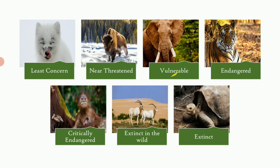The next category is 'vulnerable,' abbreviated as VU. Shown here is the African elephant. These are species which have a high risk of extinction in the wild. Another example is the snares penguin. These animals have a very high risk of going extinct in the wild.